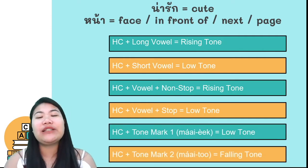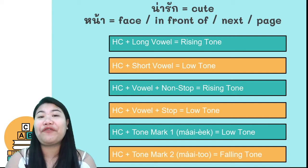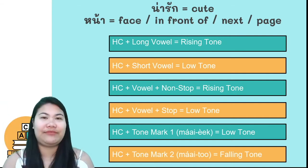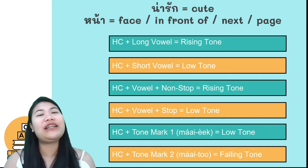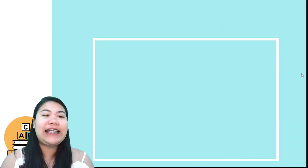When you see a tone mark in high class, we follow the tone mark. Tone mark 1: low tone. Tone mark 2: falling tone. Let's see the vocabulary.